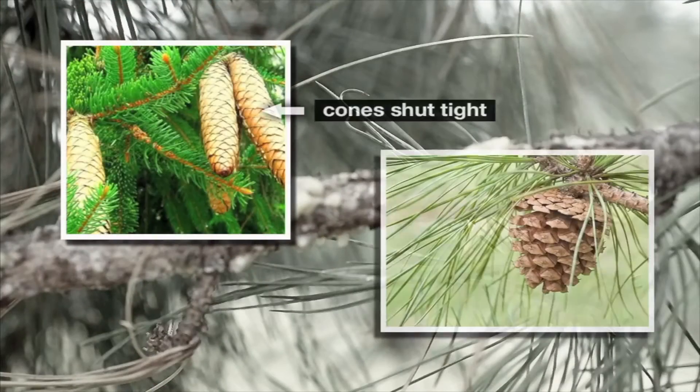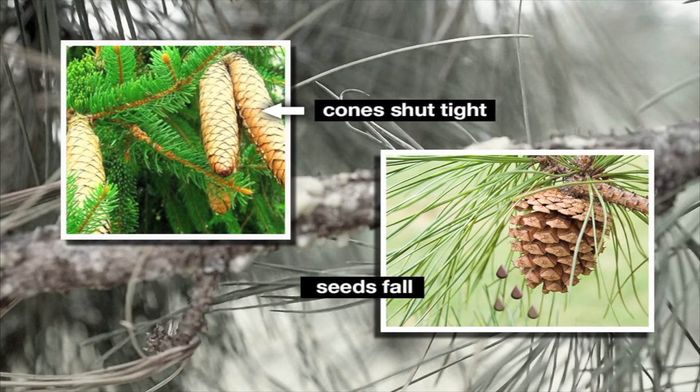Did you know that some plants don't have flowers at all? They form seeds inside cones. Pine trees and fir trees are two kinds of plants that have cones instead of flowers. At first, cones are shut tight until the seeds have developed. Then the cones open, allowing the seeds to fall to the ground so they can begin to grow.